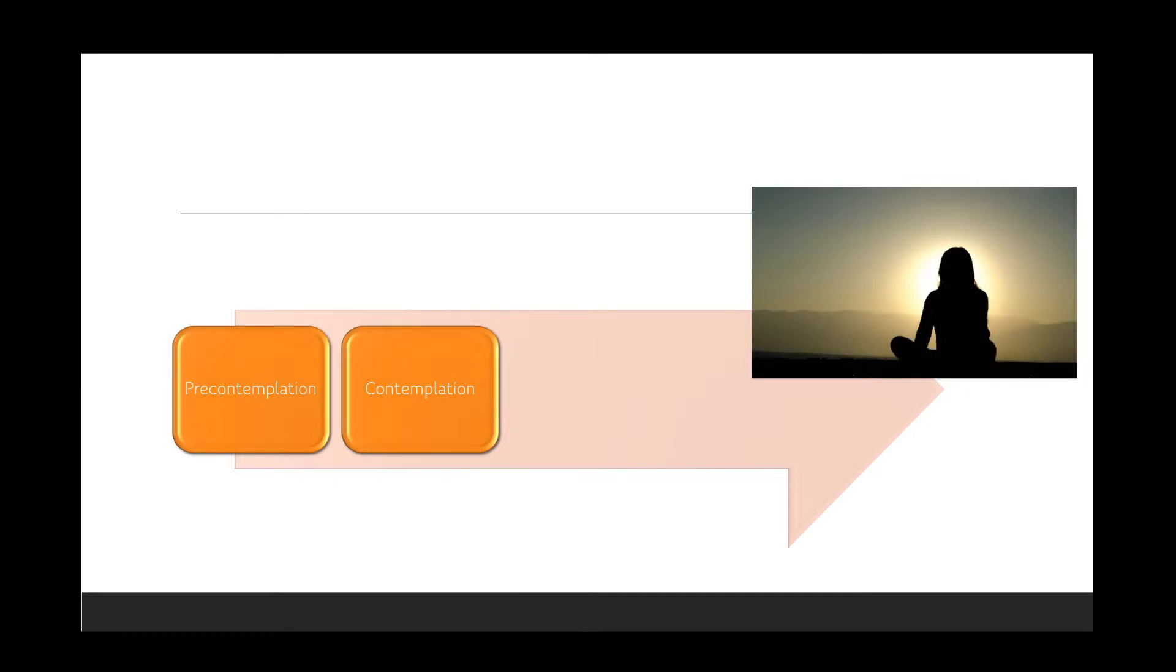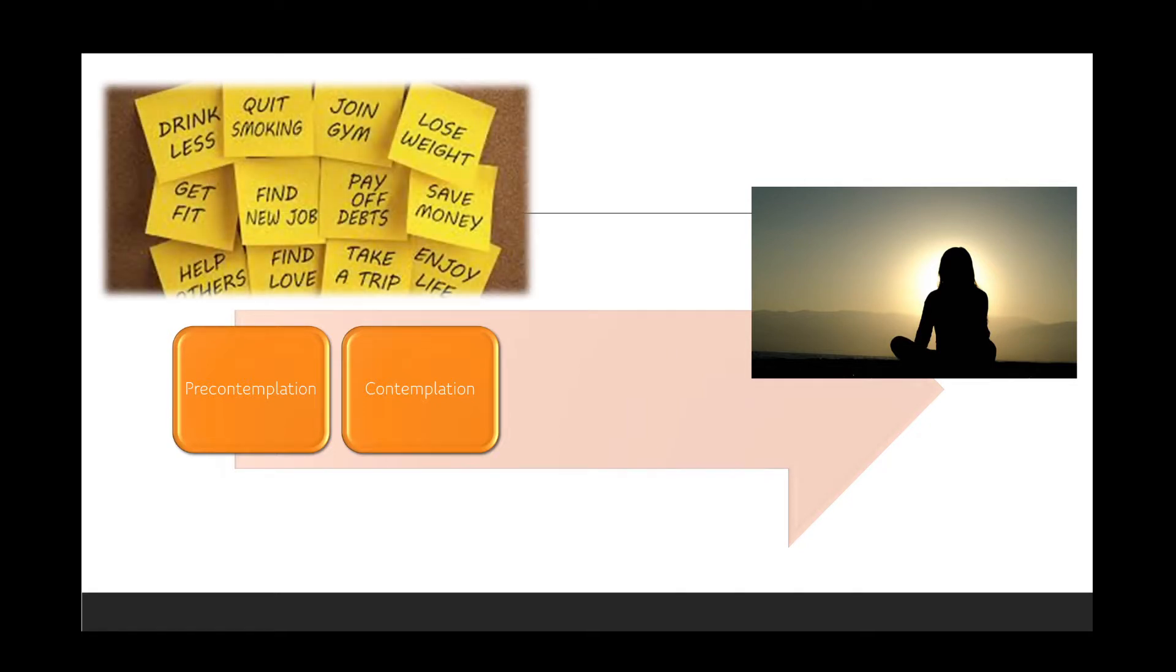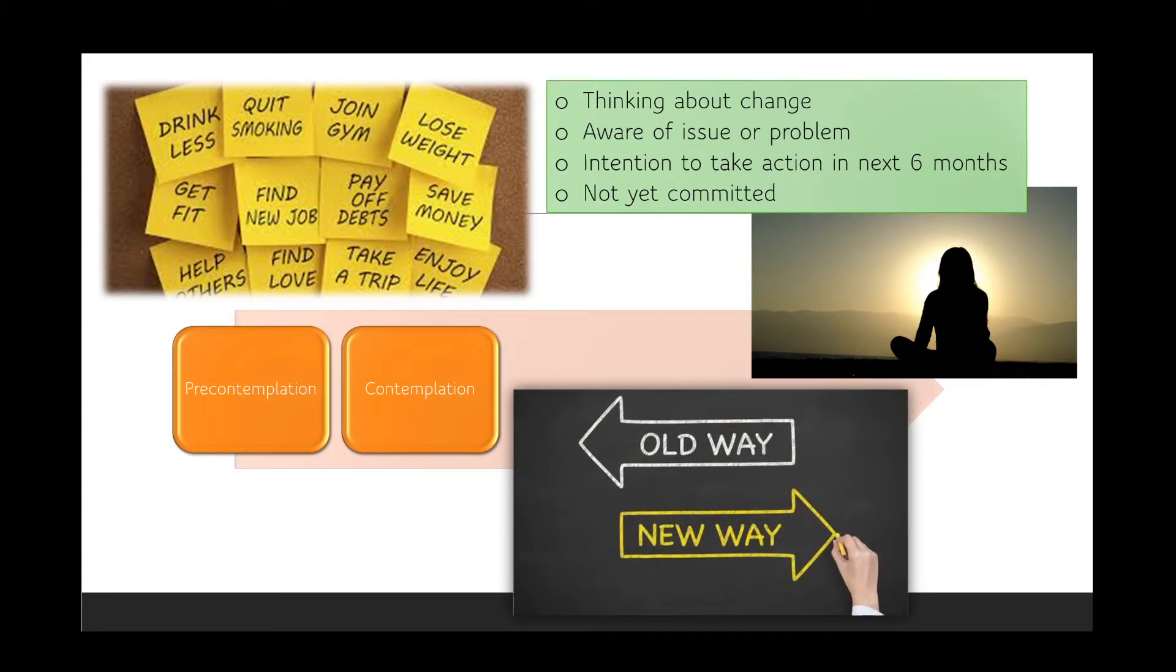The next stage is contemplation. In this stage, people might be thinking about all of their behaviors and identifying something specific that they might actually want to change. In the contemplation stage, people are aware of issues or problems related to their behavioral choices and are likely thinking about how they might take action to alter their behaviors within the next six months. Though they are examining how they currently do things and how they might be able to change the way they do those things, they're not yet entirely committed to making the change.